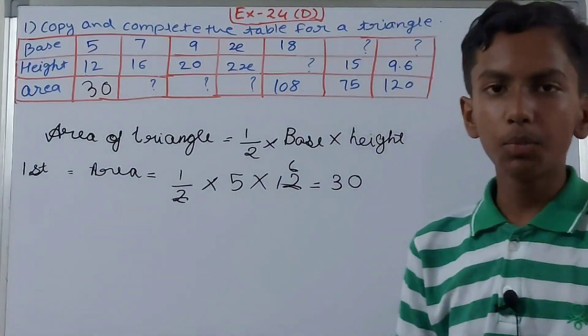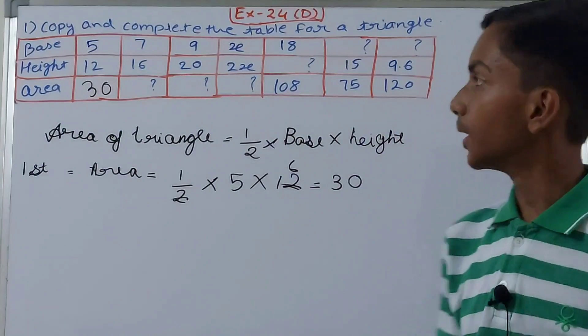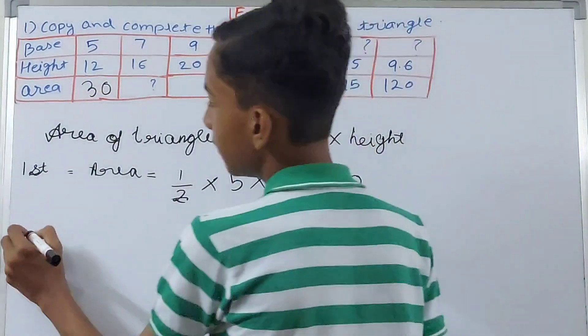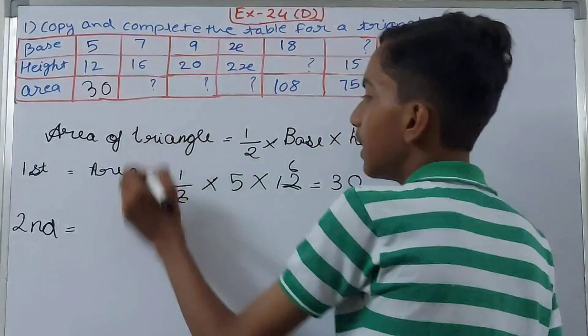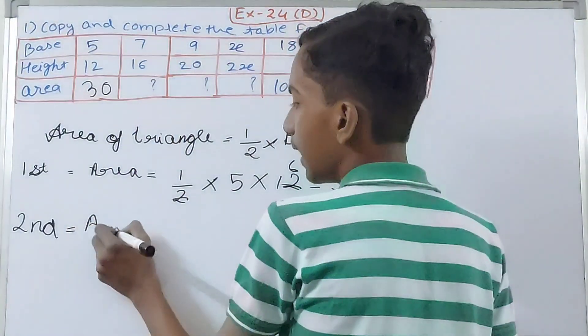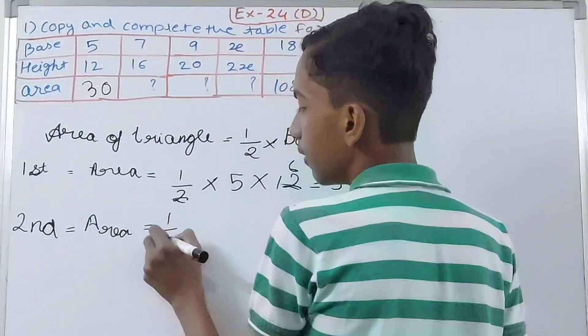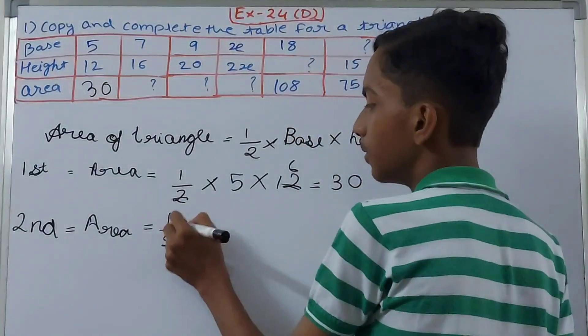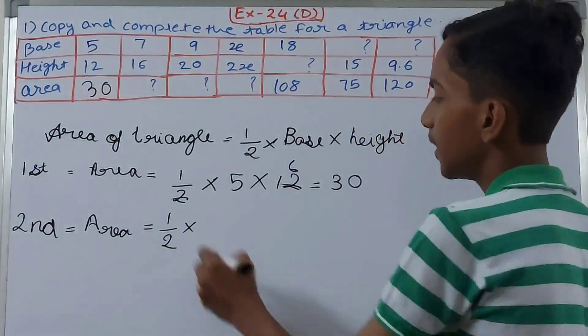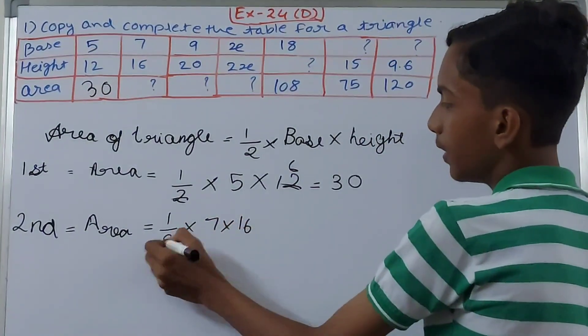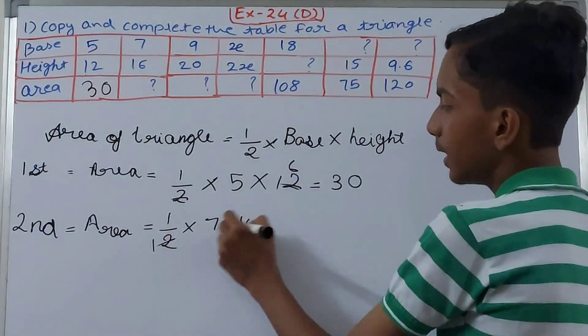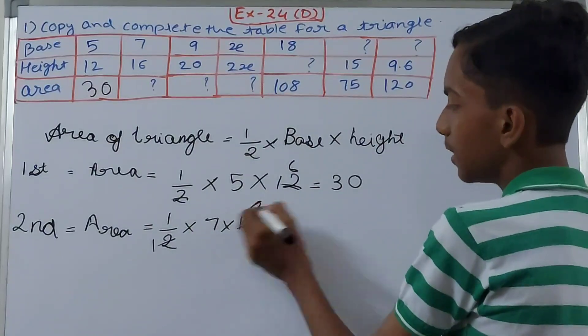Now in the second one, area is what we have to calculate. Use the formula, don't forget 1/2, then multiply by base and height. 16 goes 8 times, 7 into 8 is 56. So here we get 56.